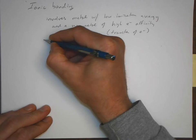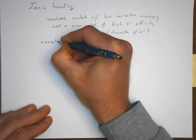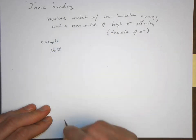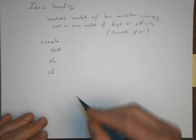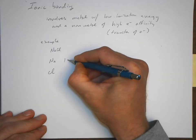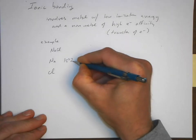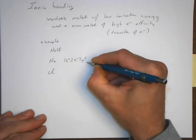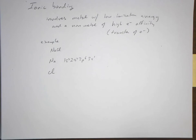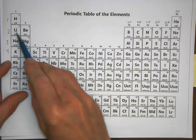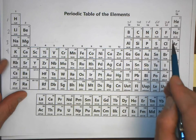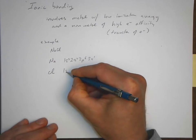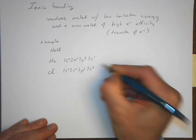Let's look at this from the perspective of the electronic diagrams. Sodium is 1s² 2s² 2p⁶ 3s¹, and for chlorine it's 1s² 2s² 2p⁶ 3s² 3p⁵. By this point you should be able to give me the electronic configuration of any element very quickly.